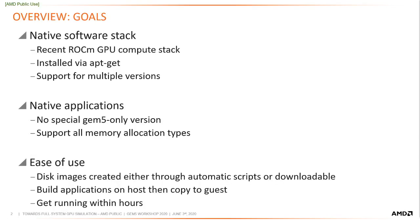The reason for wanting full system support aligns well with the goals. The user should be able to use the native software stack with native applications on the guest. Native software stack support means the user can install a recent version of the ROCm stack, which supports the latest features relevant to contemporary compute GPU applications. The stack is initialized using apt-get on an Ubuntu guest image rather than building from source. Our goal is to have the most recent version of ROCm release working at the time of each GEM5 release. With native applications, this means the user does not need to modify an application which runs on hardware to be able to run within GEM5.